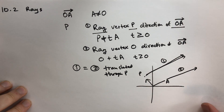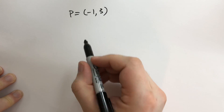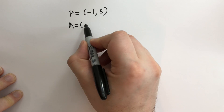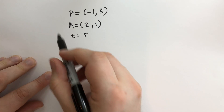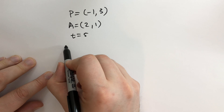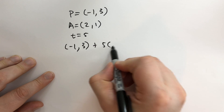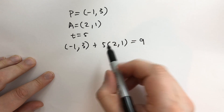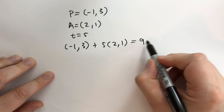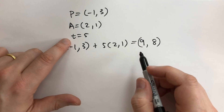Let's do some examples. We're going to have P equal to minus one comma three, and A equal to the point two comma one. If we let T equal five, then on this ray we start at negative one, three and add five times two comma one. That gives us: five times two minus one is nine, and five times one plus three is eight. So the point on the ray at T equals five is nine comma eight.